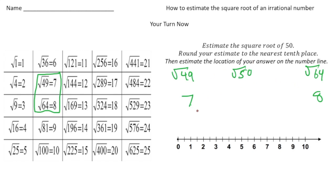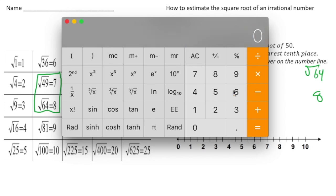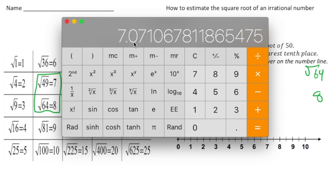Thinking of all the numbers between 7 and 8 — like 7.1, 7.2, 7.3, 7.4, 7.5, and so on — it's going to be really close to 7. So I'll give an estimation of around 7.1. Let's check with the calculator: if I type in 50 and hit square root, we get about 7.07, which is only 3 hundredths away from our estimation of 7.1.